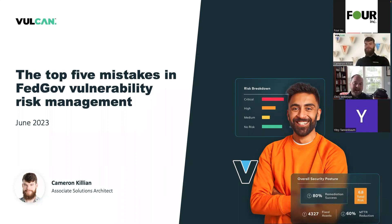We're then going to review how agencies can aggregate and correlate vulnerability and asset data to prioritize risk in context, and then to orchestrate vulnerability remediation. For those of you that don't know 4Inc, we are a federal top 100 contractor, and we serve as Vulcan Cyber's public sector aggregator. We're a 16-year-old business that was founded as an 8A, and we ultimately rose through the ranks to become the number one 8A in the country in 2016, 2017, and ultimately in 2018 when we graduated from that program. Now I'll turn it over to Cameron Killian, the Associate Solutions Architect at Vulcan Cyber.